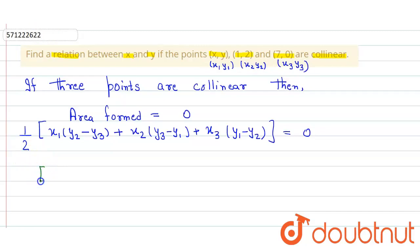We get x1 is x and y2 is like 2 minus 0, plus here it is 1 plus 1 into 0 minus y plus x3 is 7 into y minus 2 and that one is equal to zero.